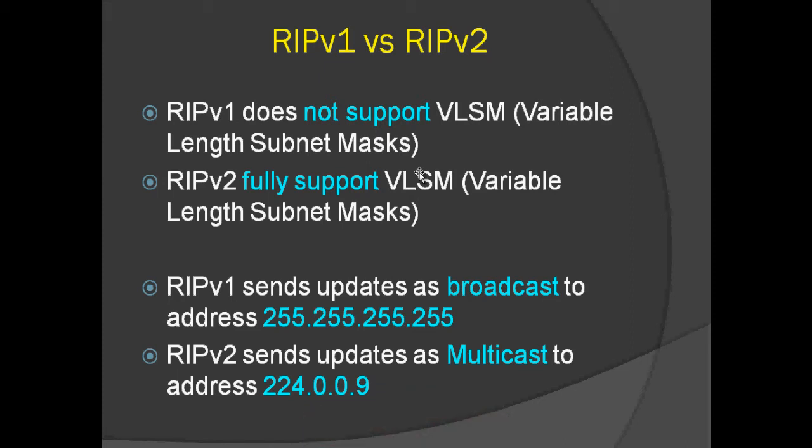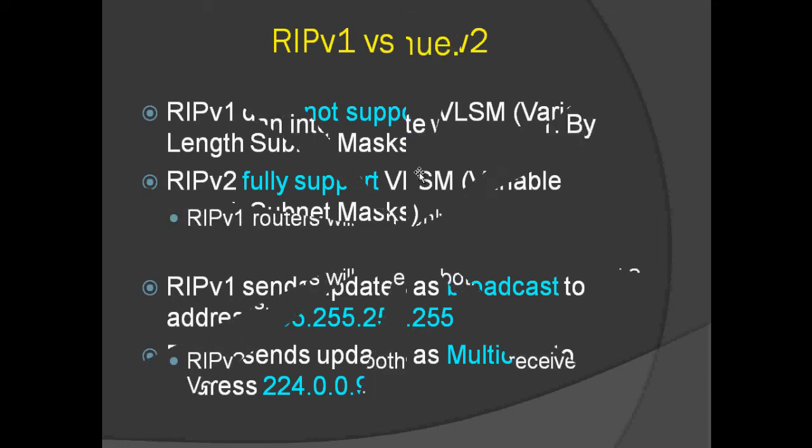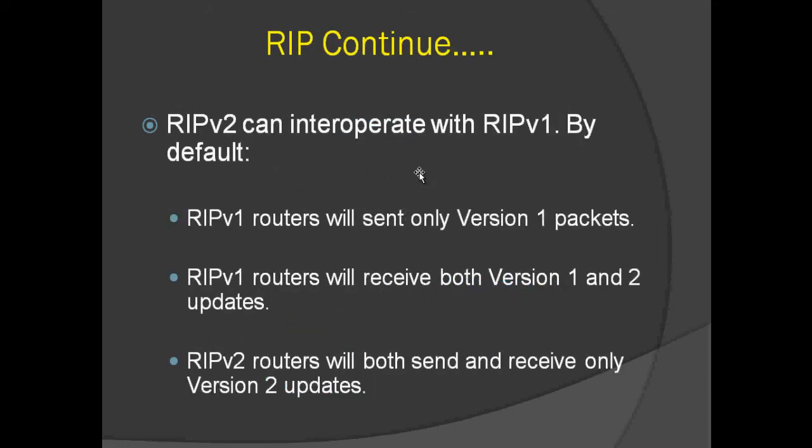RIP version 1 router will send only version 1 packets. RIP version 1 router will receive both version 1 and version 2 updates — it sends version 1 packets only, but receives both version 1 and version 2 packets. RIP version 2 router will both send and receive only version 2 updates.